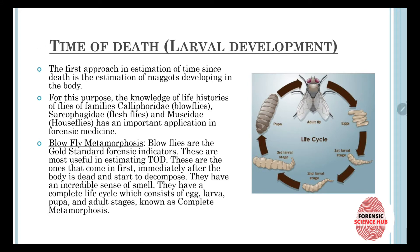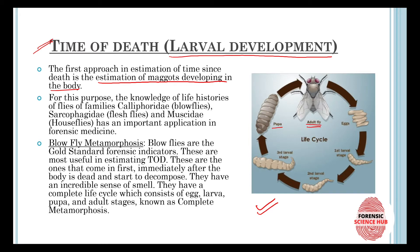First, we are going to discuss time of death, which is going to depend upon larval development. The first approach in estimation of time since death is the estimation of maggots developing in the body. We need to see what stage the insect is in its life cycle — the adult fly lays its egg, then it goes into larval stages, then pupa is formed, and then the final insect is formed. We need to estimate this development cycle of the insect in order to determine the time of death.